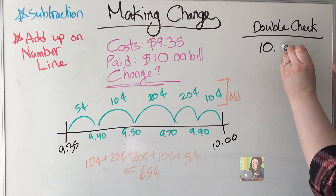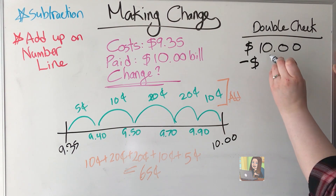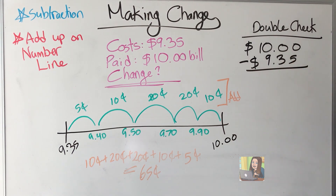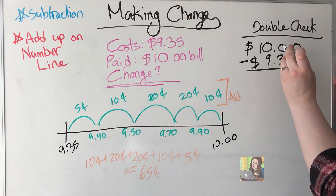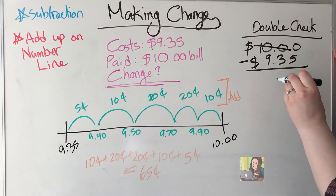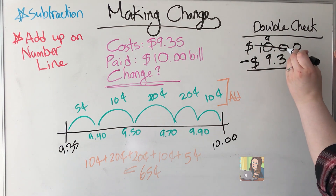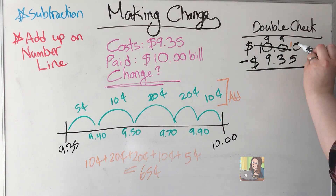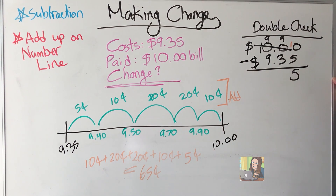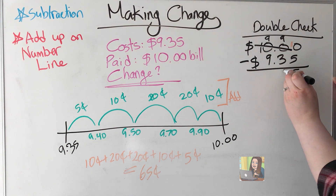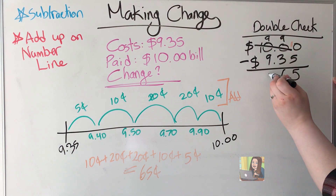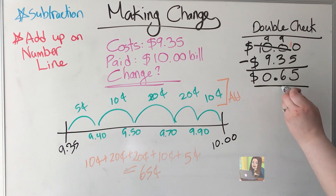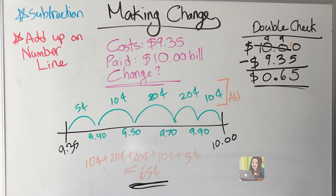Let's double-check using subtraction. Ten dollars take away nine dollars and 35 cents — line up those decimals. I can't subtract from zeros, so I'm going to borrow all the way across: the one becomes a nine, that zero becomes a nine, and I get a ten. Ten take away five is five, nine take away three is six, bring down the decimal, and nine take away nine is zero. That gives me 65 cents — it matches!